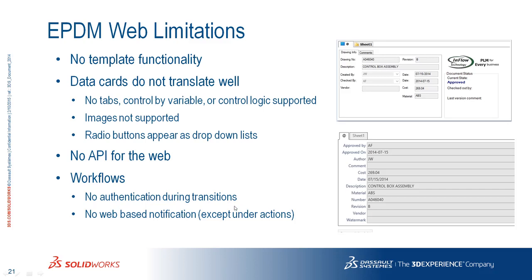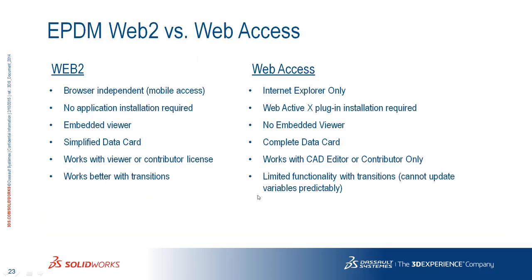The biggest sticking point is making sure it works with your workflows. For viewers, no problem — they may not be transitioning files, so you might be fine just using it for viewing. Now comparing to the Web Access tool: Web2 is browser independent, while Web Access is Internet Explorer only. With the web tool, no installation is required beyond your browser. With Web Access, an ActiveX plug-in is required — this has been the biggest headache for many people, as it's hard to get past security settings. IT people spend more time getting that installed than they would have spent installing the regular client.